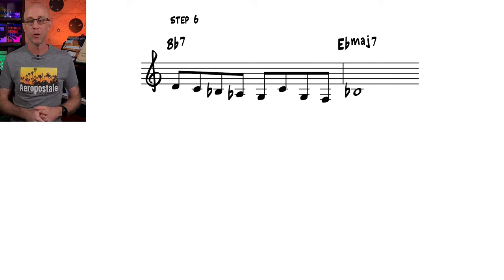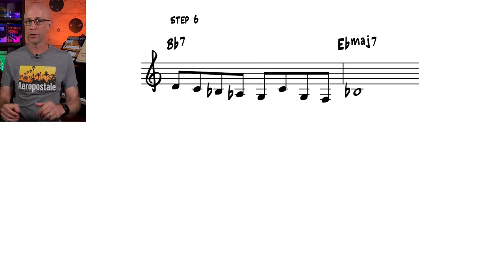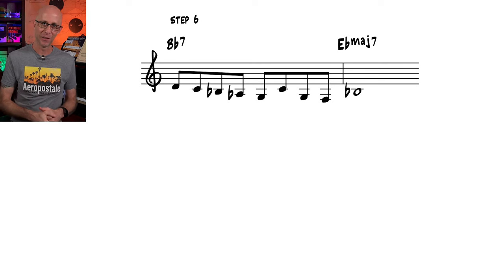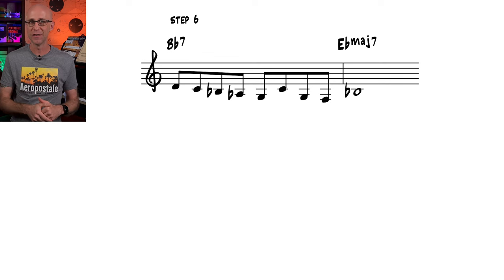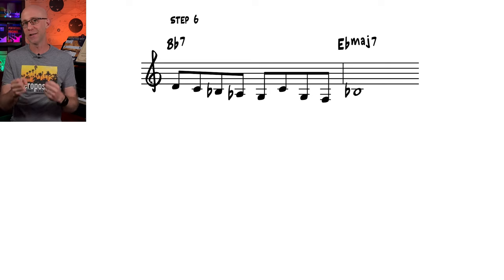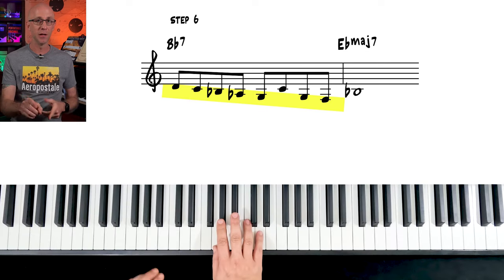Step 6. Here's another useful shape which could work on a V7b9 to a major target, or a simple major 7 or major 6 chord. It's a simple descending line with a twist at the end, and it's ubiquitous in jazz. This is another compound line as the one in the previous step was. I want you to think of this line as two lines. A descending line like this,